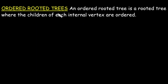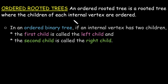Now we are going to learn about the ordered rooted tree, also called the ordered tree. An ordered rooted tree is a rooted tree where the children of every internal vertex are arranged in a specific order, typically from left to right. This means the position of children matters. In an ordered rooted tree, the sequence of children is very important. In an ordered binary tree, the first child is always categorized as the left child and the second child is called the right child.